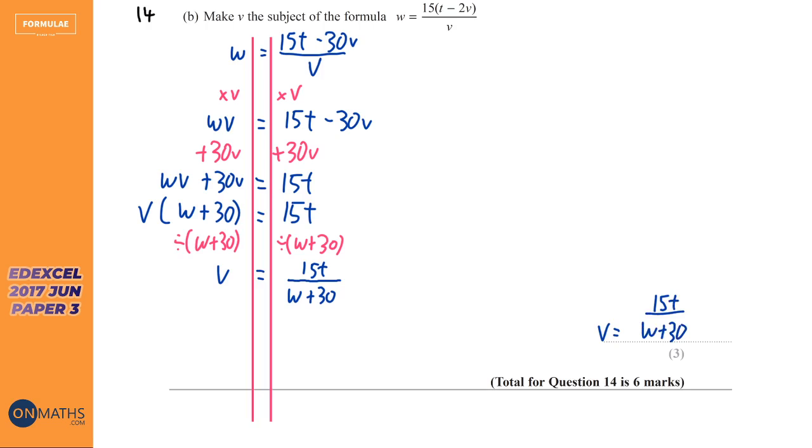So the key to that is get the V terms on the same side and then factorize. That's the kind of two steps you need to remember to do when you've got multiple Vs or multiple letters that you're trying to make the subject in the same formula. If you remember that, the rest of it is as simple as the first two questions.